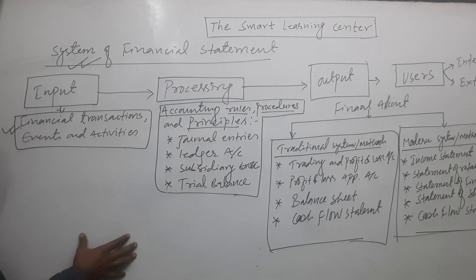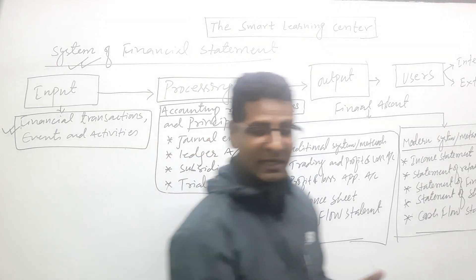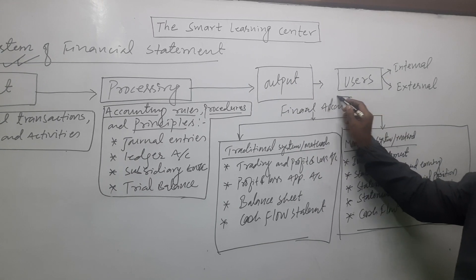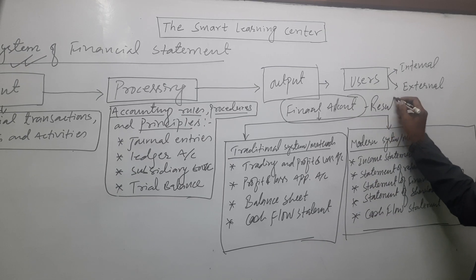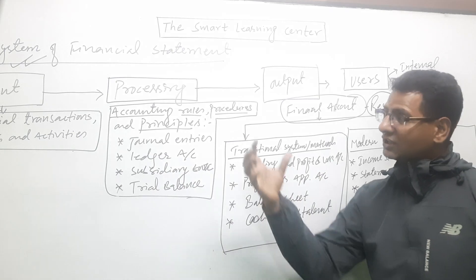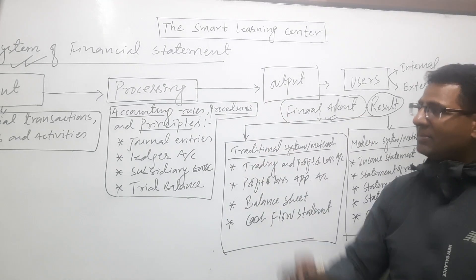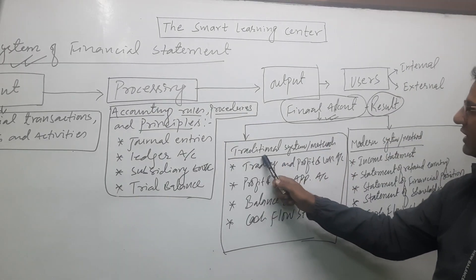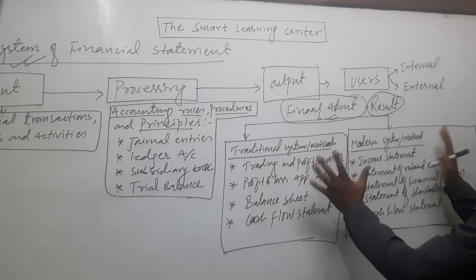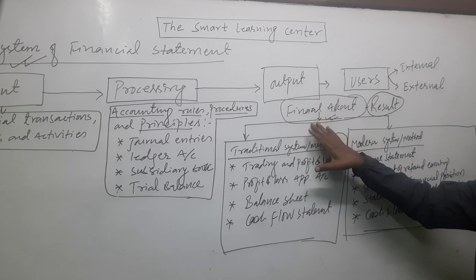On the basis of the processing mechanism, we need output. Output is the very important part of this accounting or financial statement system. Your output is the result — you have to make a final account. The output is a final account, which is the financial statement.